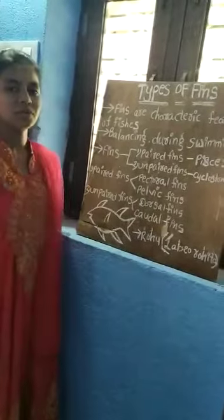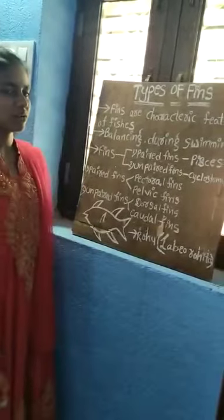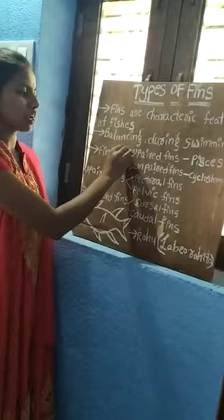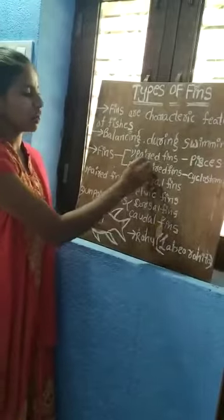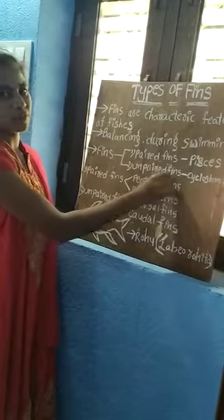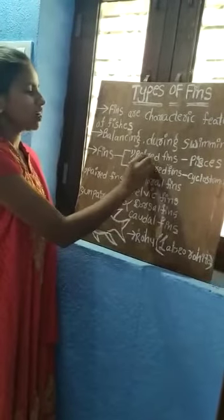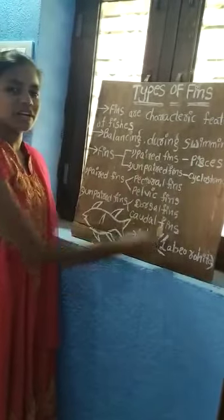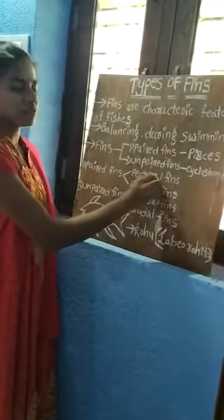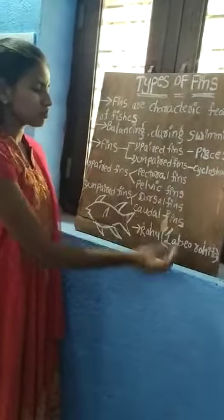Fins are of two types. They are paired fins and unpaired fins. Paired fins are divided into two types: they are pectoral fins and pelvic fins.